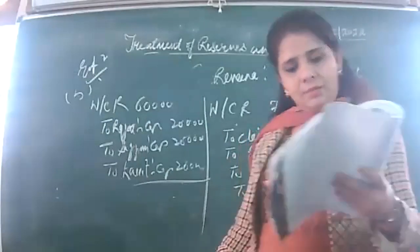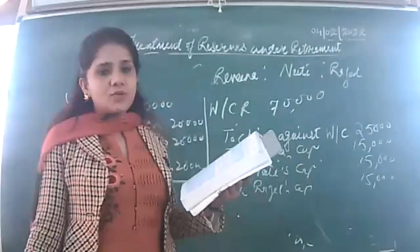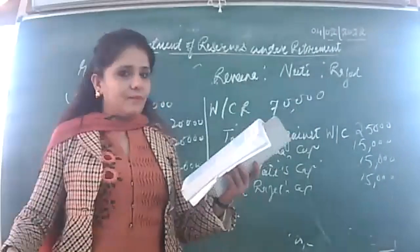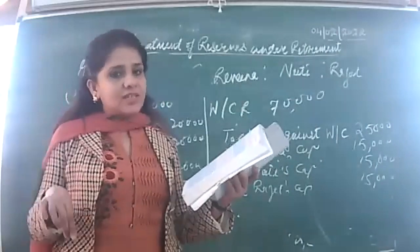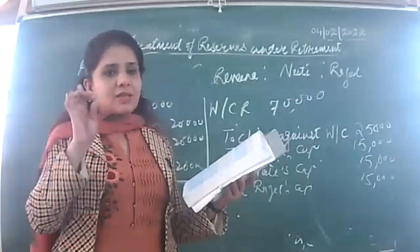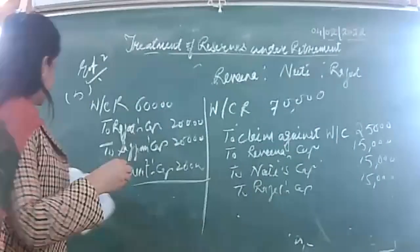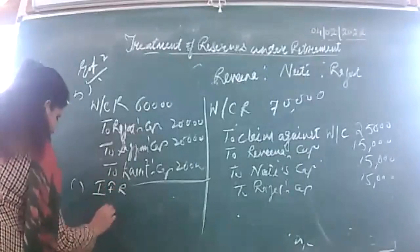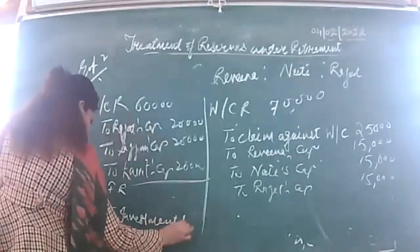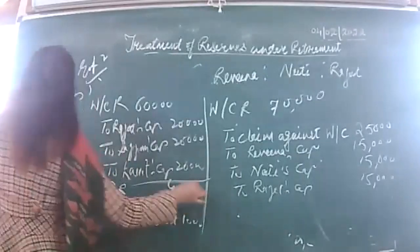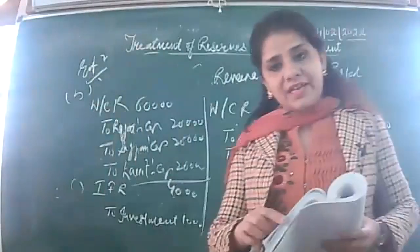Part C: IFR is 4,000. IFR is always to be used against the decrease in value of investment. Investment in books of accounts is 20,000; current market value is 19,000 — there is a loss of 1,000. That 1,000 loss will be covered from IFR. Entry: IFR account debited to investment 1,000. The remaining IFR is divided among partners — to X's capital, to Y's capital, to Z's capital.